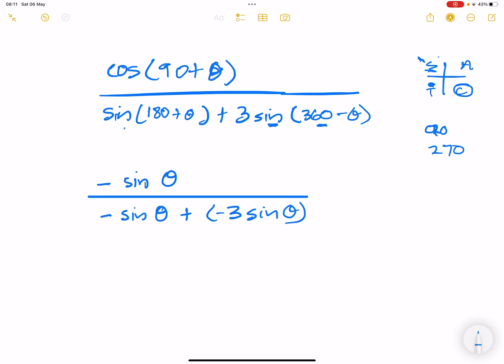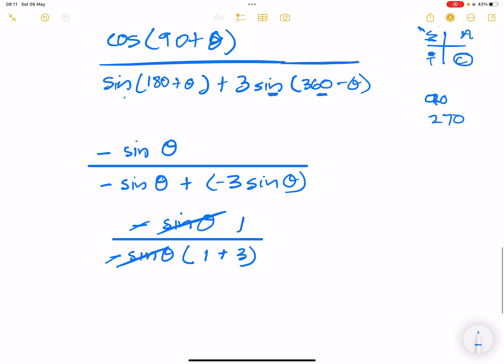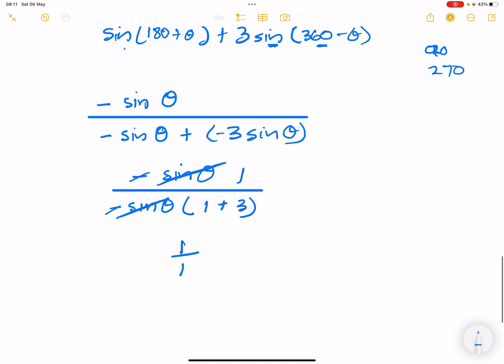So now what do we have? We've got -sin(θ). And at the bottom, what I'm going to do is take out -sin(θ) as a common factor. What will I have? I'll have 1 + 3 in that case. So we realize that can cancel. Of course, negative divided by negative is positive. So we're left with 1 at the top. Our final answer would be 1/4.